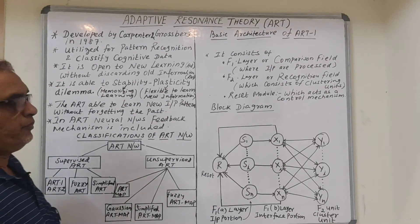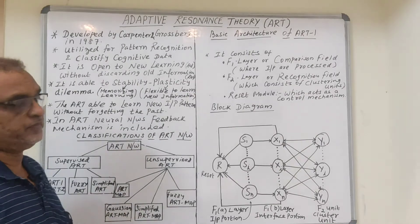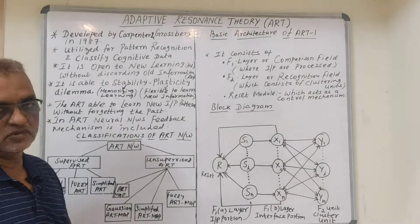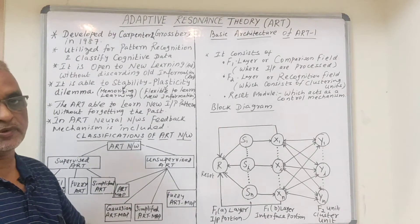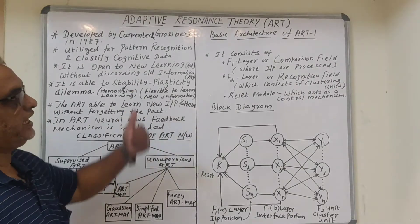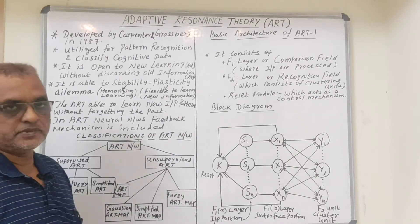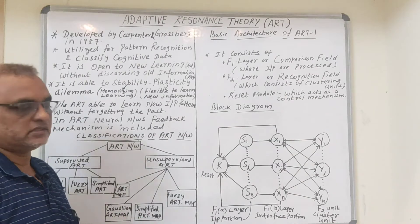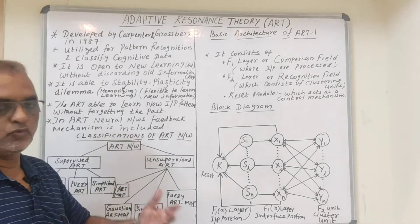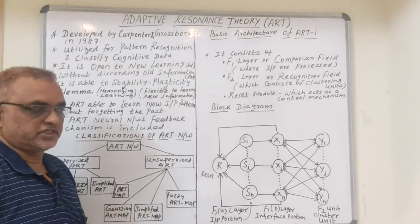ART is open to new learning — it is adaptive without discarding old information, and so it has the property of resonance, which is how it got the name Adaptive Resonance Theory. Learning new concepts occurs without discarding or removing old information, and that is the key advantage of ART.